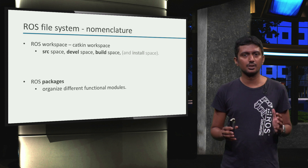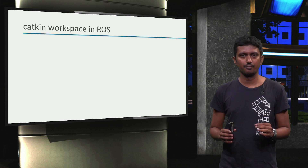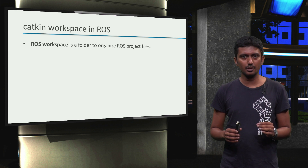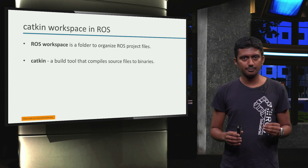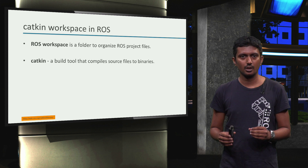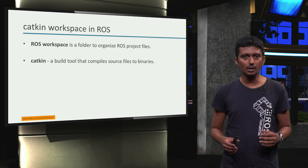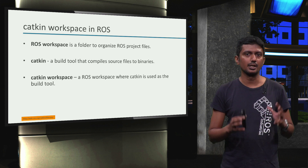Let's understand these terms one by one. We will first learn what a CATKIN workspace is in ROS. A ROS workspace is a folder in your computer where you can organize various ROS project files. CATKIN is a build tool that compiles the source code files in a project into executable binaries — it does a lot more, but this understanding is sufficient in the context of this course. So, a CATKIN workspace is a ROS workspace that uses CATKIN as a build tool.